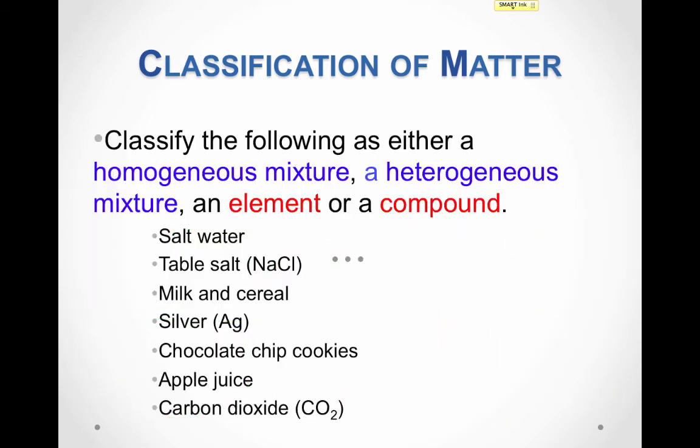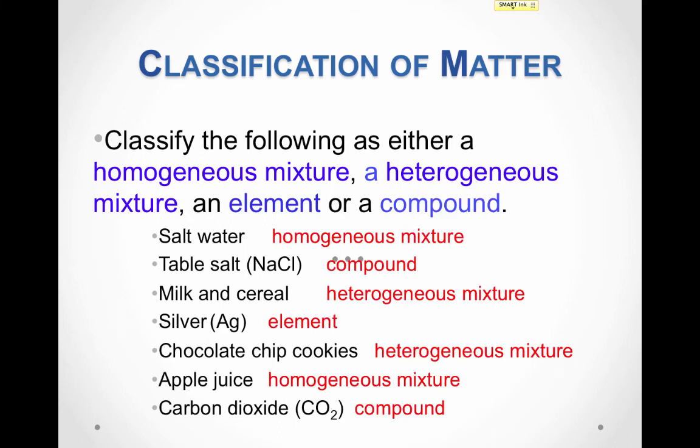Here are some different examples of types of matter. See if you can classify each as a homogeneous mixture, a heterogeneous mixture, or if it's a pure substance — as an element or a compound. When you come back, I'll display the answers. Here's what you should have gotten — take a second and check your answers before we move on to the next topic.